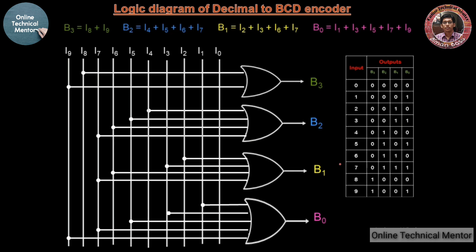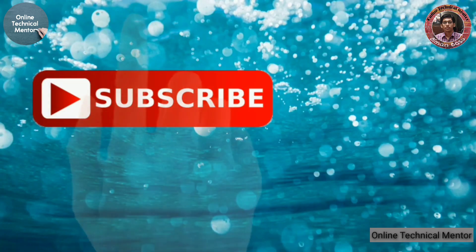Let's verify with the truth table using input i5 as an example. When i5 is high, two connections are drawn from that line — to the b2 OR gate and the b0 OR gate. So b2 and b0 become 1, while b3 and b1 remain 0. The output is 0101, which is the BCD of 5 — confirming the logic diagram is correct.